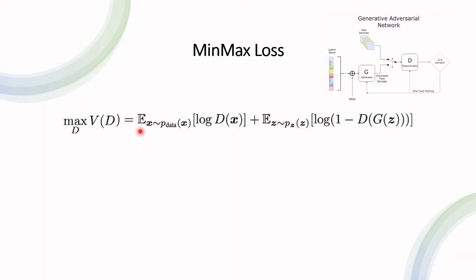The expectation value over here, followed by x for the first term and z for the second term, indicates that over here we are looking at instances taken from the real data distribution. And over here, we're taking a look at instances taken from the noisy distribution of some latent space.